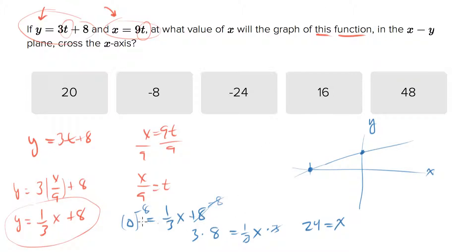Oops, I missed the negative on that 8. That's 3 times negative 8. This is negative 24, so that will be the third answer choice.